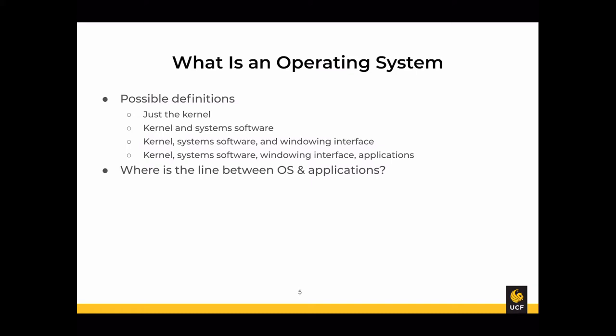I've been using the term 'operating system kernel' to skirt a definitional issue: what exactly is the operating system? Depending on who you ask, it might be just the kernel, or the kernel plus system tools, or perhaps the windowing interface is also part of the OS, or even holistically all software on the machine. This begs the question: what is the line between the OS itself and applications — user software not strictly necessary for operation but dependent on the OS to run?